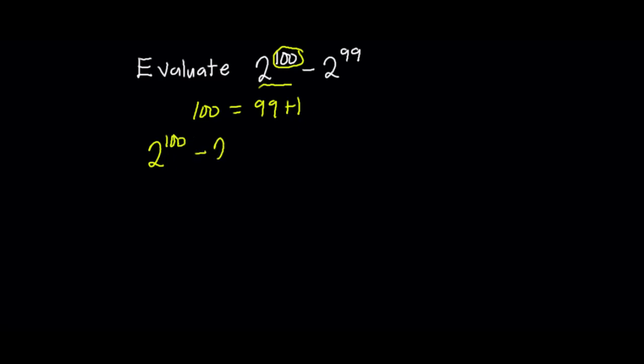This gives us 2^(99+1) minus 2^99. Now if you take a look at this, this is an indices problem where we are adding exponents. From the law of indices...